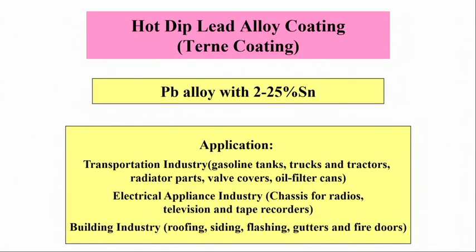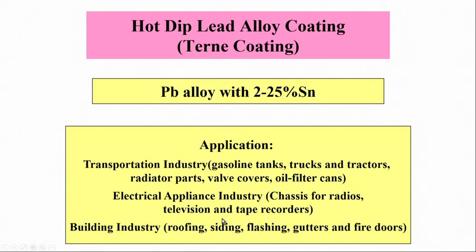Terne coating is another alloy used for hot dipping — a lead-based alloy with 2 to 25 percent tin. It is mainly used for improving anti-friction properties. Tin must be used because pure lead has very poor wettability. Terne coating is used in transportation industry, electrical appliance industry, and building industry for items like gasoline tanks, trucks and tractors, radiator parts, valve covers, oil filter cans, chassis for radios, television and tape recorders, and fire doors.